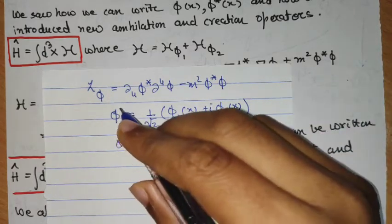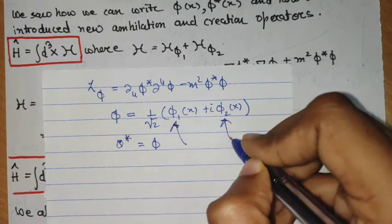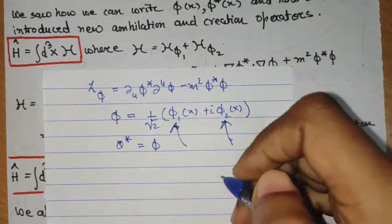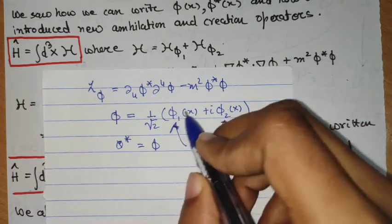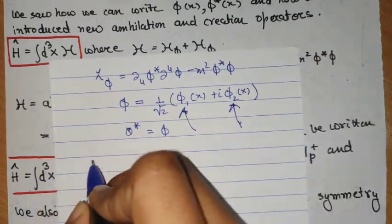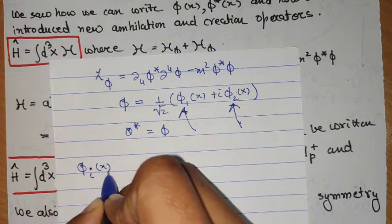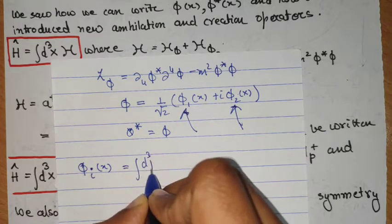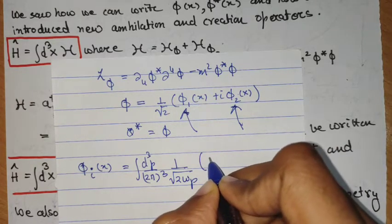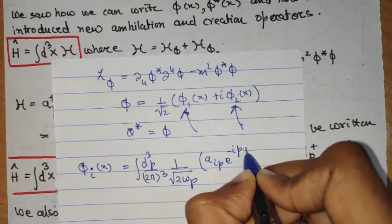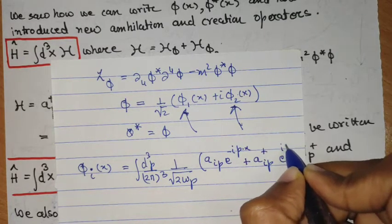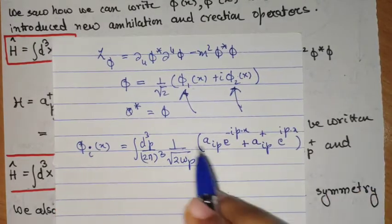This also helped us to write phi in terms of operators, where we used the operator representation of phi 1 and phi 2, and identified that the creation and annihilation operators of phi 1 and phi 2 add up to create new creation and annihilation operators. So phi i of x, where i takes values 1 or 2, was of the form with 1 over 2 omega p, with a i p times e to the minus i p dot x plus a i p dagger times e to the i p dot x — this is in the Heisenberg picture.